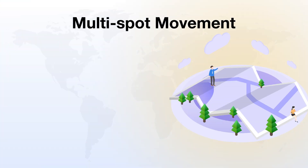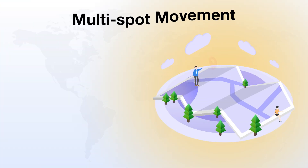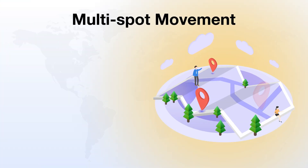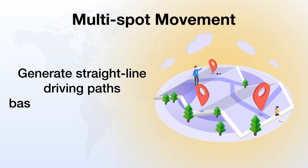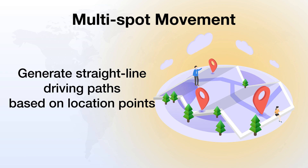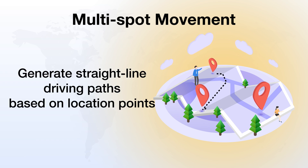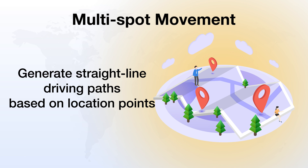Two: multi-spot movement. If you want to try a more complex path, the multi-spot move function allows you to set multiple position points, and the software generates a straight line according to the position points.